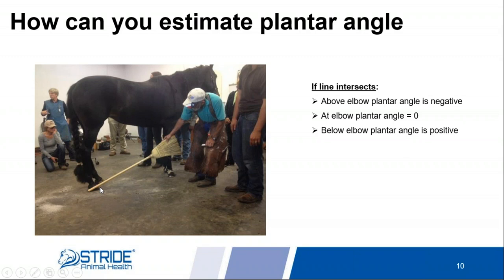You can tell even without a radiograph: look for the bow in the hoof, look for the underrun heel, look for that steep coronary band angle, and see where that imaginary line intersects the horse. If you suspect a negative planter angle, it's always best to confirm with a radiograph.